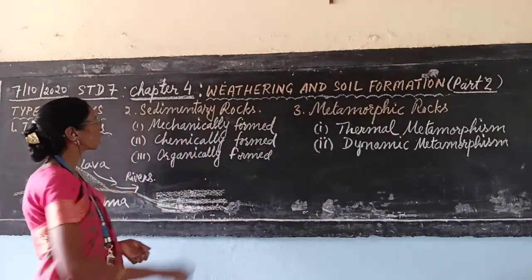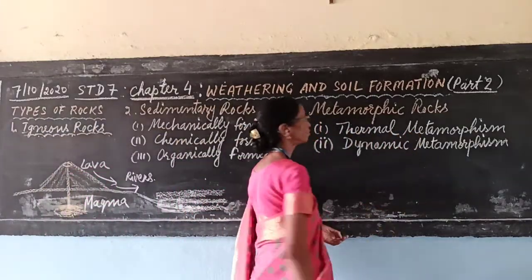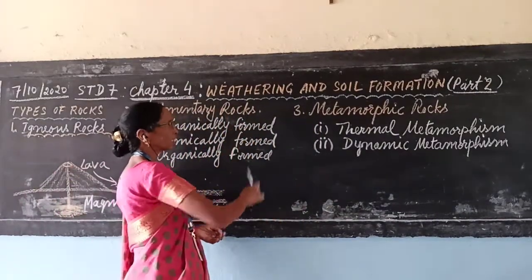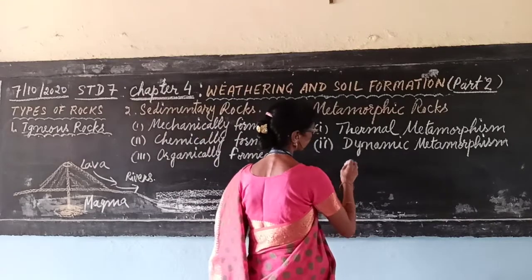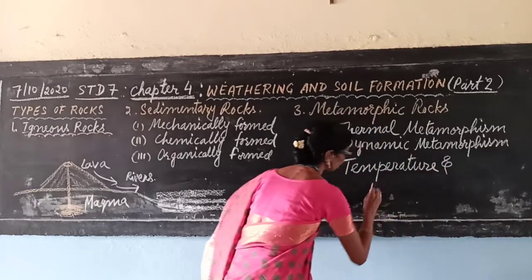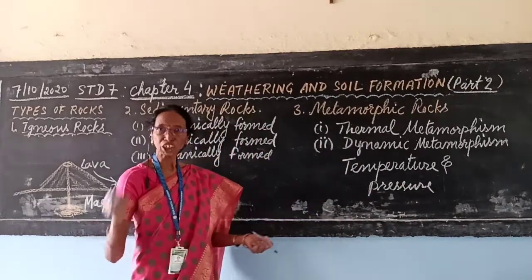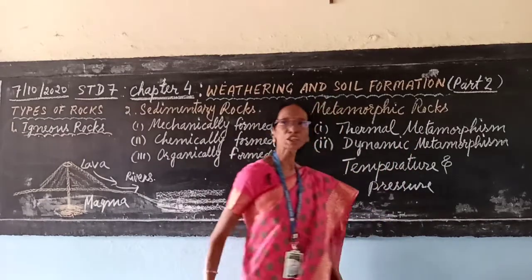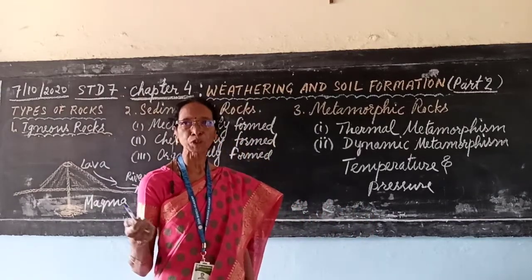The third rock type is the metamorphic rock. Either igneous rocks or sedimentary rocks, in the deep interior due to very high temperature and pressure, are completely changed and form a new substance or rock that is known as metamorphic rocks. Examples include marble, slate, and schist — all these are examples of metamorphic rocks.